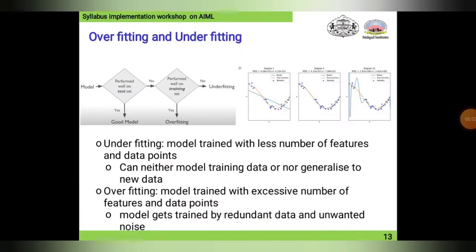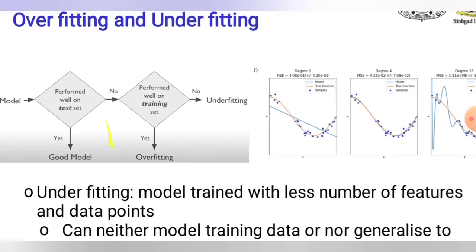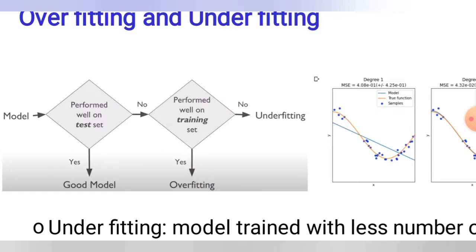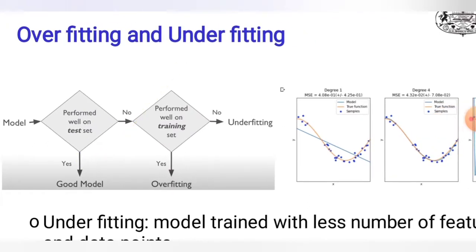Coming back to the new topic: overfitting and underfitting. The name itself indicates that overfitting means having excessive data and underfitting means having lesser data. Before exploring results, we will understand this flowchart. On the left side, the model is evaluated: if it performs well on the test set, that is a good model. If not, we check training set performance — yes means overfitting, no means underfitting.